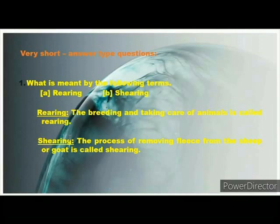Question 1: What is meant by the following terms? A. Rearing. B. Shearing. Answer: Rearing — the breeding and taking care of animals is called rearing. Shearing — the process of removing fleece from the sheep or goat is called shearing.